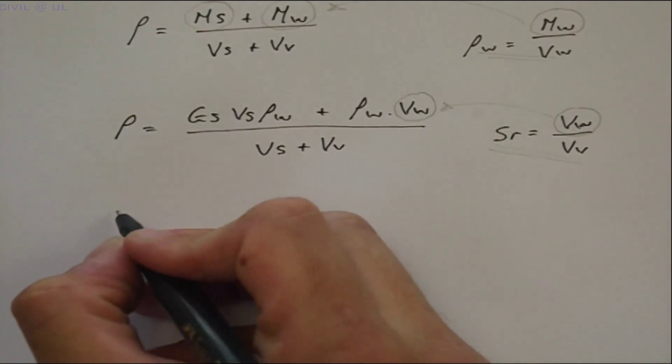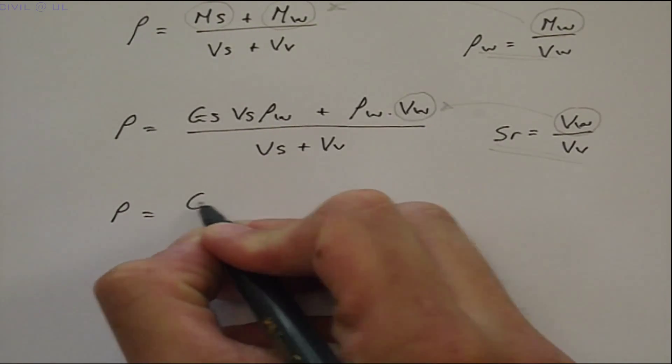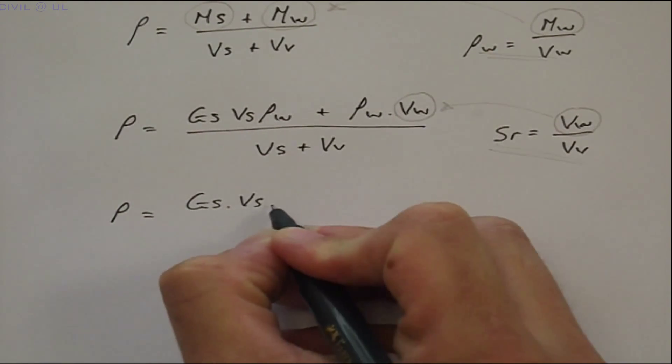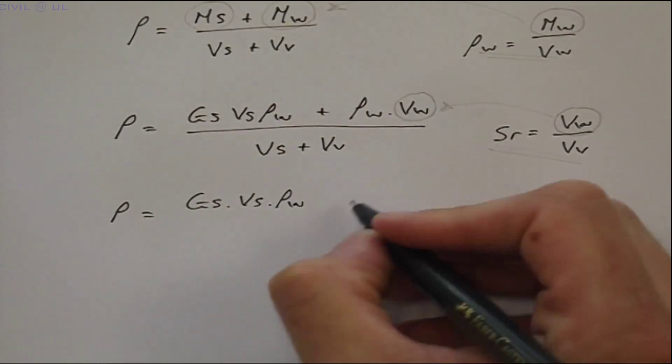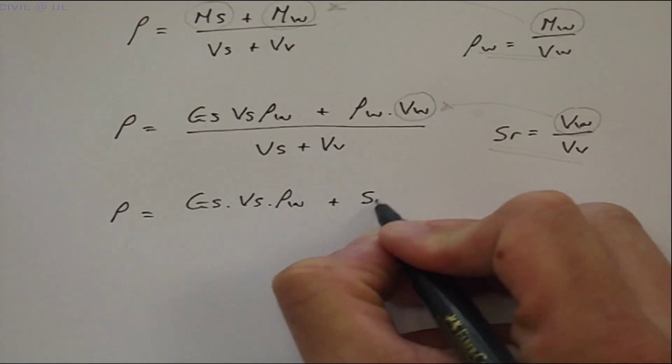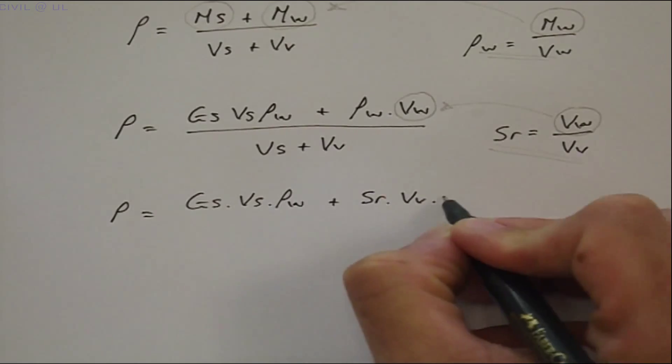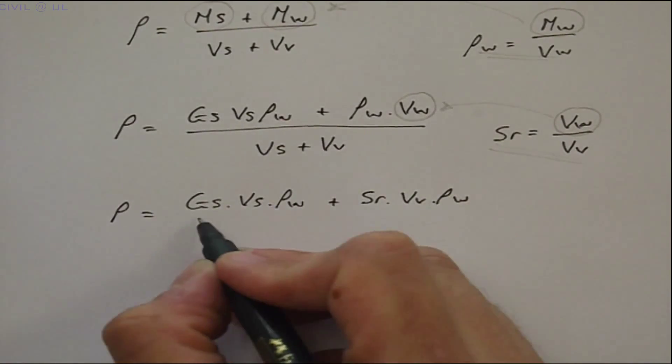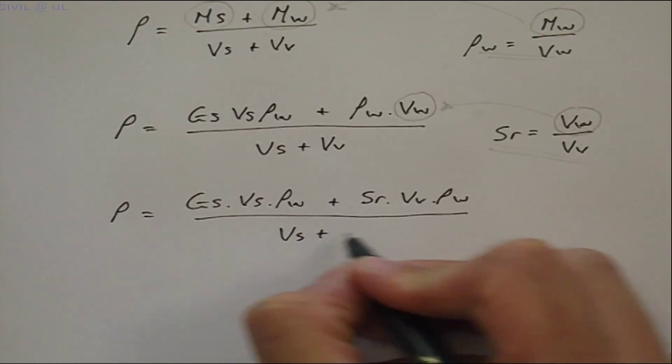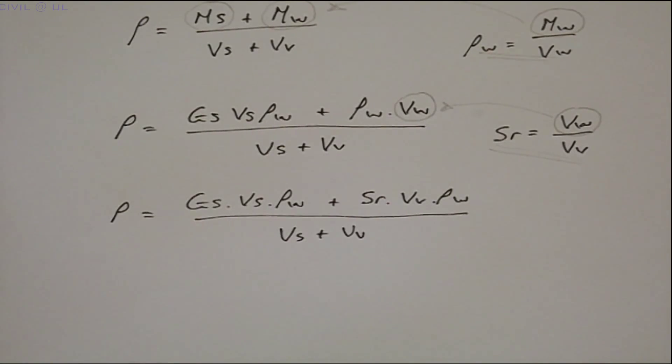So we now have density is equal to GS times VS times ρW, plus our new substitution SR times VV times ρW, again, all divided by VS plus VV. Now, if we divide above and below by VS.